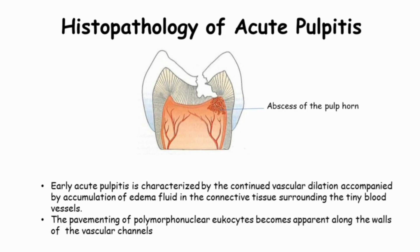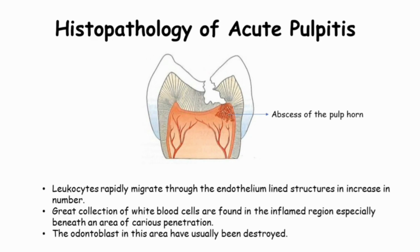The pavementing of polymorphonuclear leukocytes becomes apparent along the walls of the vascular channels. Leukocytes rapidly migrate through the endothelium-lined structure, which is increased in number. A great concentration of white blood cells are found in the inflammatory region, especially beneath the area of caries penetration. The odontoblasts in this area have usually been destroyed.